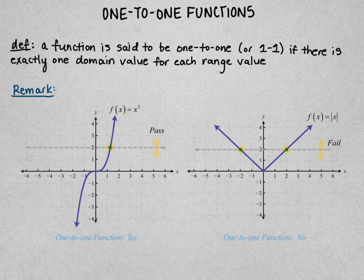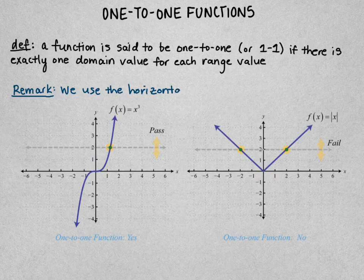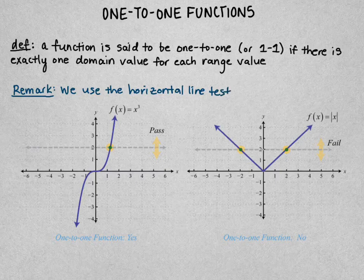We say that a function is one-to-one if there's exactly one domain value for each range value — precisely one x for every y. To test if a function is one-to-one, we use the horizontal line test to test if a function f(x) is one-to-one.